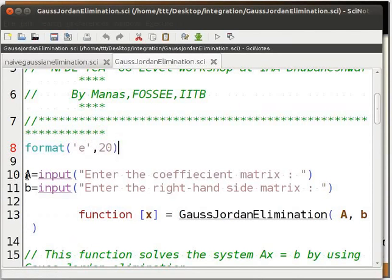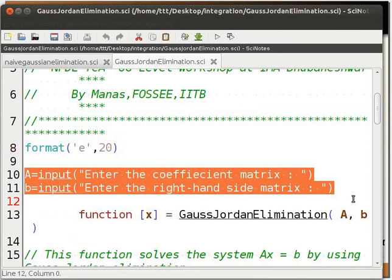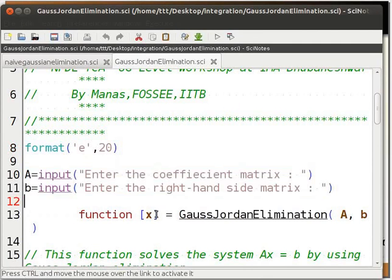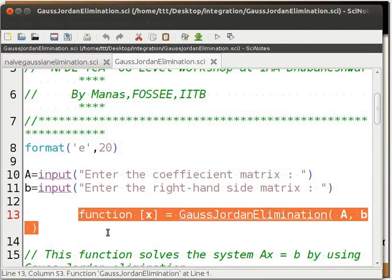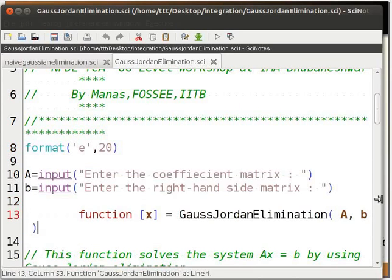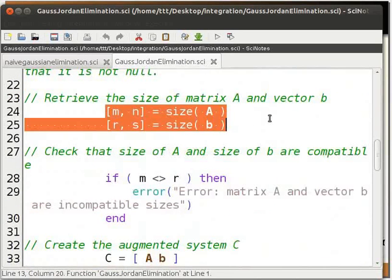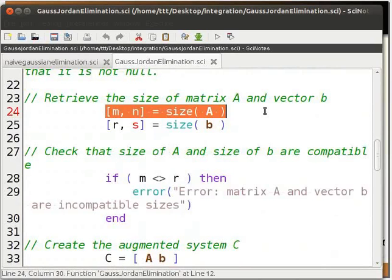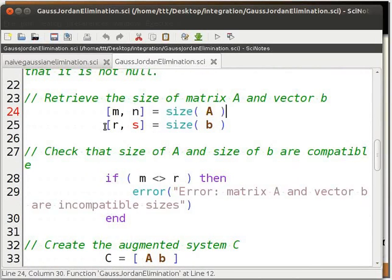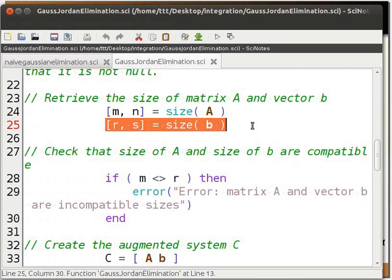Then we get the A and B matrix using the input function. We define the function Gauss-Jordan elimination with input arguments A and B and output arguments X. We get the size of matrix A and store it in M and N. Similarly, we get the size of matrix B and store it in R and S.